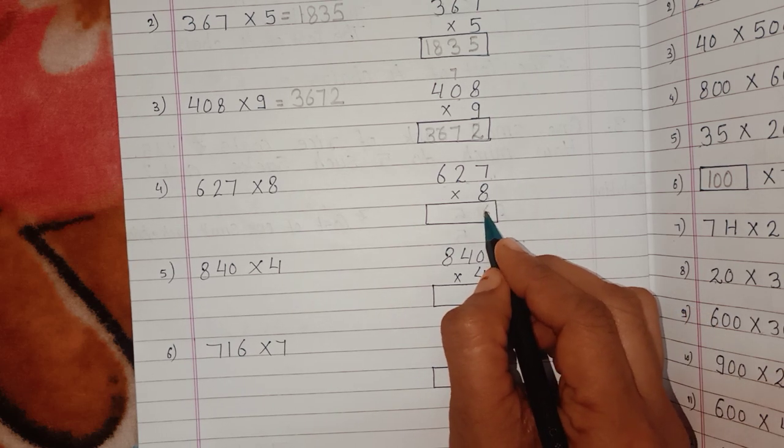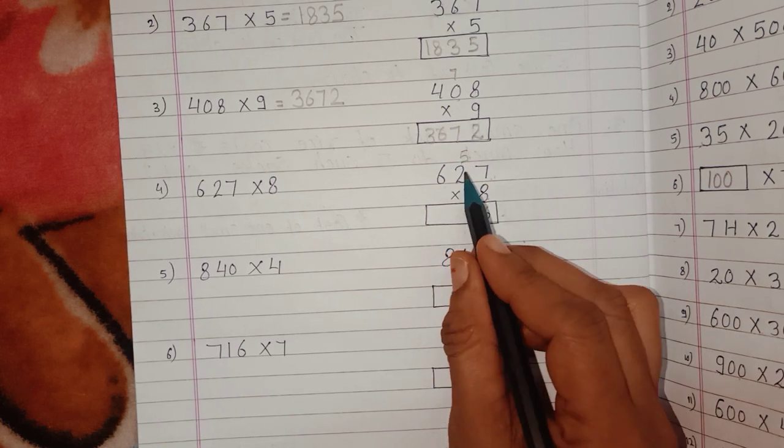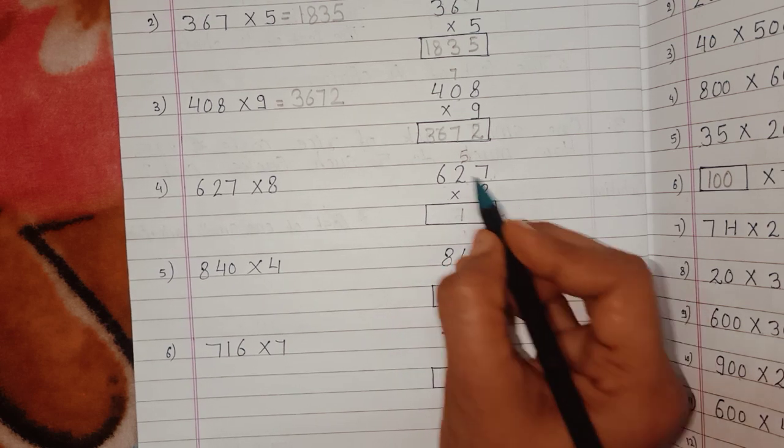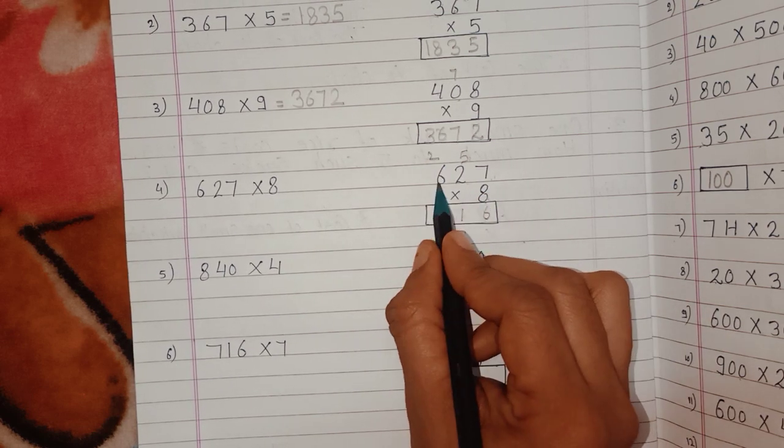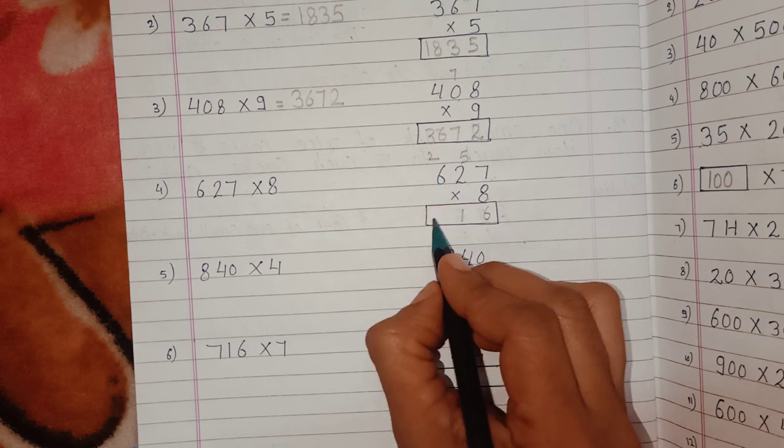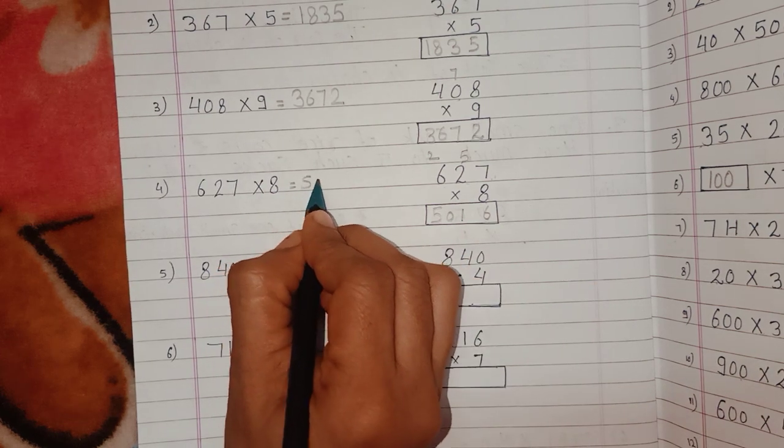8 times 2 is 16, plus 5 is 21, so 1 here, carry 2. And 8 times 6 is 48, plus 2 is 50. So the answer for this question is 5016.